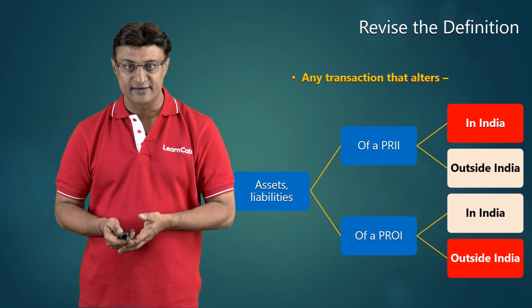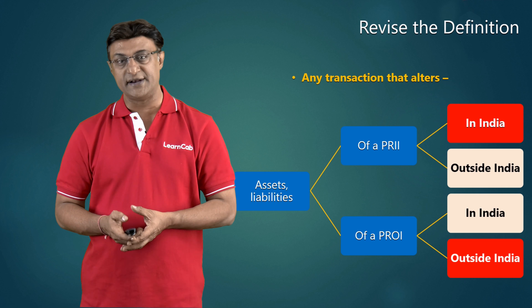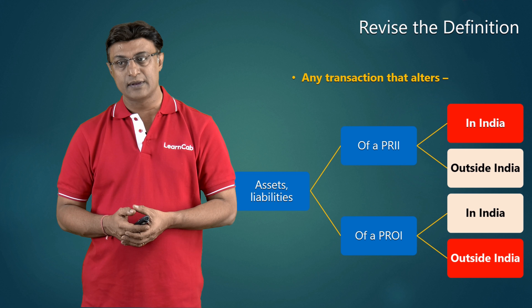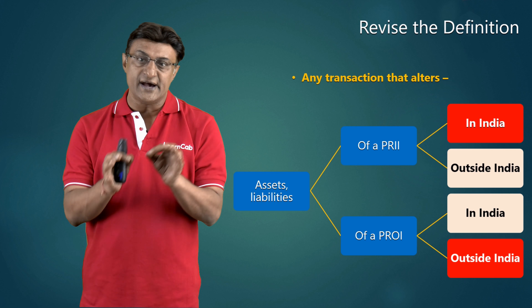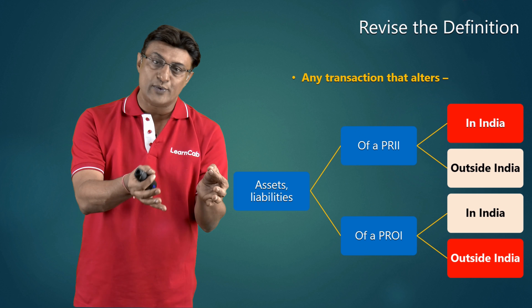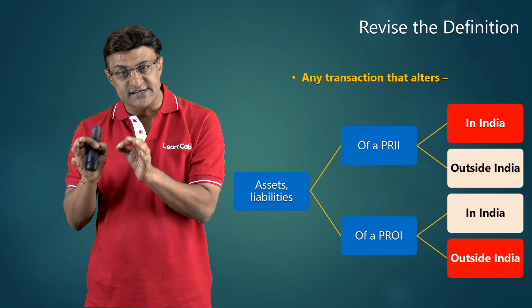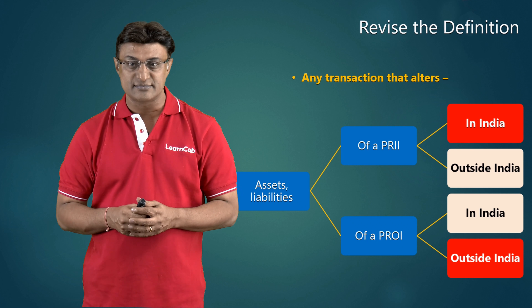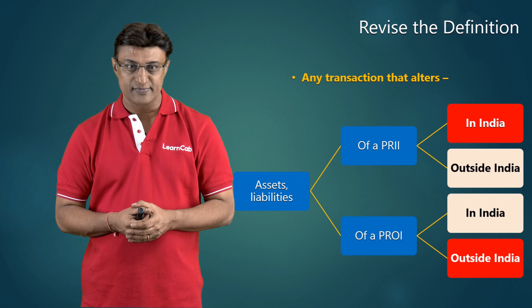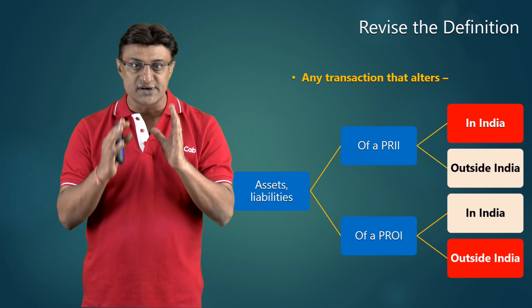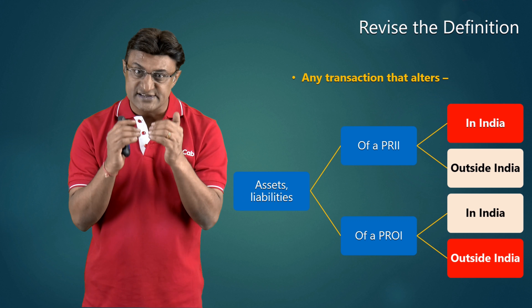If you break it up for easy understanding, the ingredients of the definition are: first, a change in the value of assets and liabilities; second, outside India of a person resident in India; and third, in India of a person resident outside India. These are the three limbs of the definition — a change in assets and liabilities either acquired, added, or decreased, outside India by a person resident in India, or in India by a person resident outside India.